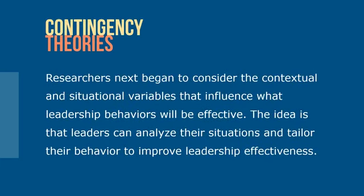Researchers next began to consider the contextual and situational variables that influence what leadership behaviors will be effective. The idea behind contingency theories is that leaders can analyze their situations and tailor their behavior to improve leadership effectiveness. Major situational variables are the characteristics of followers, characteristics of the work environment and follower tasks, and the external environment. Contingency theories, sometimes called situational theories, emphasize that leadership cannot be understood in a vacuum separate from various elements of the group or organizational situation.